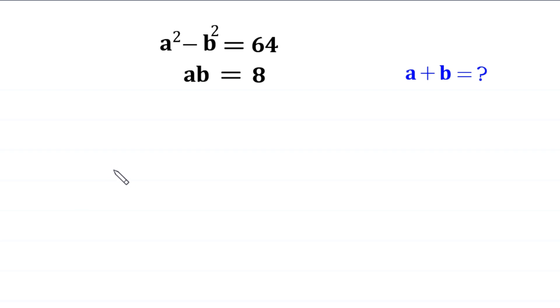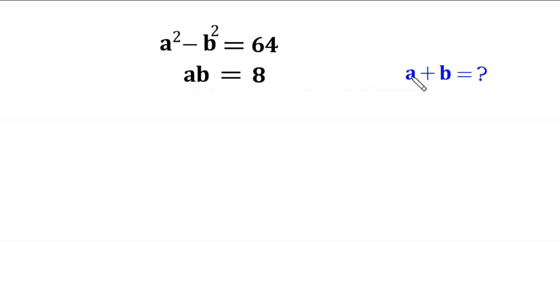Hello everyone, you are welcome to how to solve this very nice system of equations. a squared minus b squared is equal to 64, and ab is equal to 8. Our job is to find all possible values of a plus b.